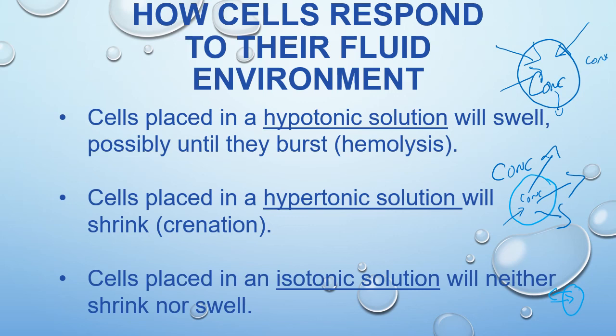In lab, if we put red blood cells in a hypotonic solution — just regular tap water — we're going to get hemolysis. The cells themselves are going to fill up with water coming in until that cell eventually bursts open. A hypertonic solution is going to cause the cells to lose water, start to shrivel up, and undergo what we call crenation — the cell gets smaller and smaller and may even die that way.